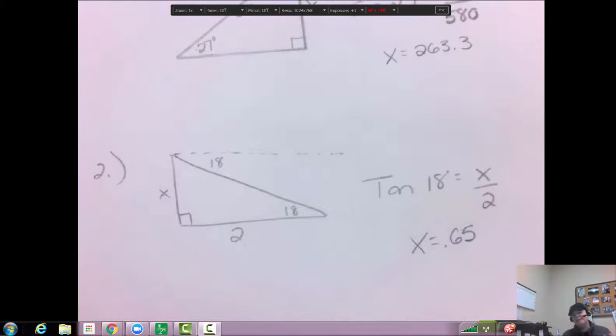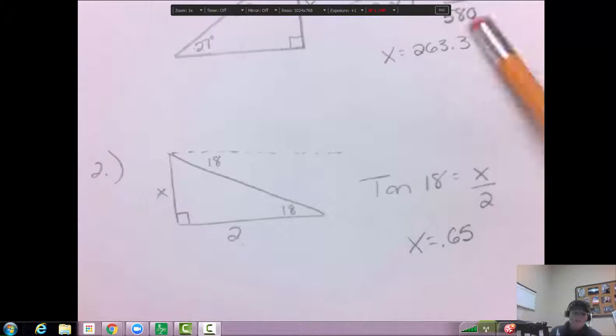And those are really the only examples I'm going to give you. So you just need to memorize what is depression. So it's going to be from the top down. And angle of elevation is going to be from the bottom up. So you can label those. And then you're still using those same functions that we learned in the last chapter or section.